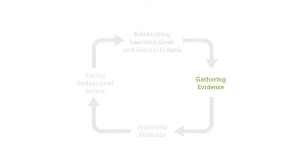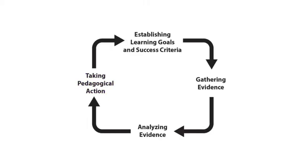Next comes gathering evidence of student learning, then analyzing the evidence, and finally taking whatever action is needed to close the gap between where students are and where they need to be. But the first one — establishing learning goals and success criteria — anchors all the others.